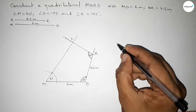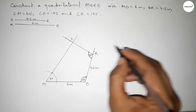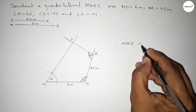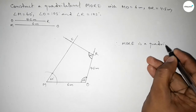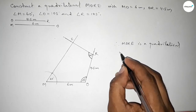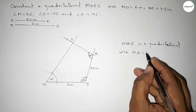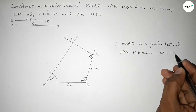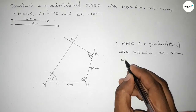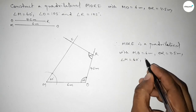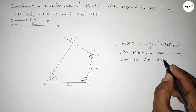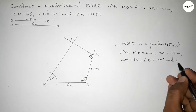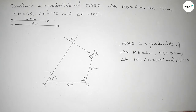Therefore, MORE is a quadrilateral with given side MO equal to 6 centimeter, OR equal to 4.5 centimeter, angle M equal to 60 degree, angle O equal to 105 degree, and angle R equal to 105 degree. That's all — thanks for watching. If this video is helpful to you then please share it with your friends.